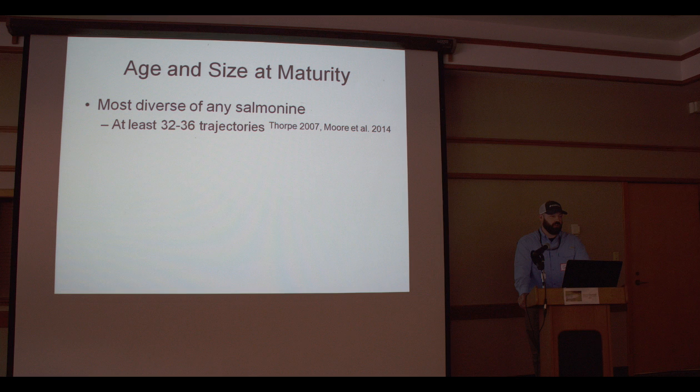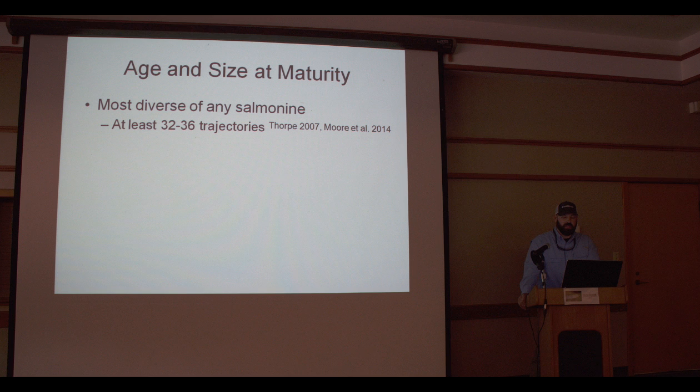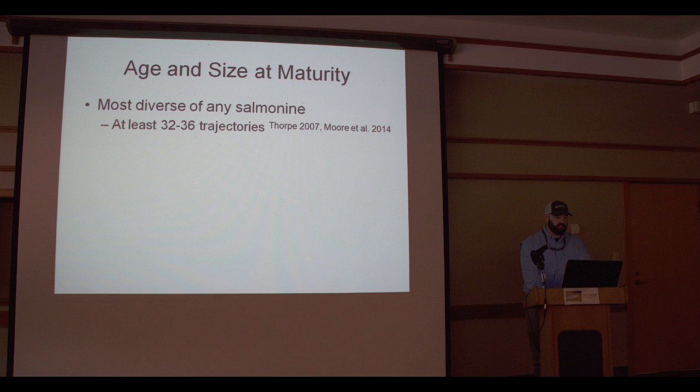The first component is age and size at maturity. For steelhead and Oncorhynchus mykiss in general, they are the most diverse of any salmonid we have. There are at least 32 to 36 life history trajectories that a steelhead can follow to maturity, based on work by Thorpe and Moore in the Skeena. When you look to Kamchatka, where populations have not been altered as highly, some of those rivers are seeing over 40 life histories. There's a tremendous amount of diversity.